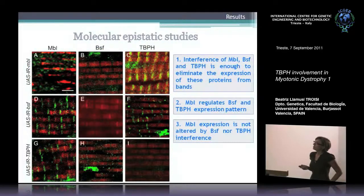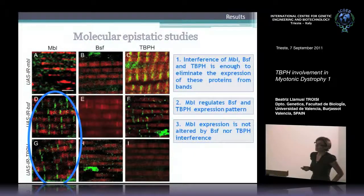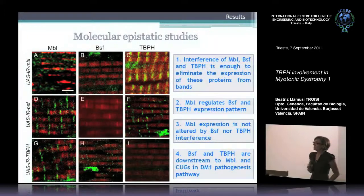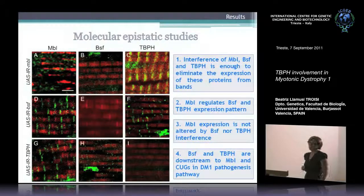Moreover, we saw that muscle-blind expression was not altered by BSF RNAi or TBPH RNAi — it was still detectable in bands — thus suggesting that BSF and TBPH are downstream of muscle-blind and CTGs in the pathogenesis pathway.